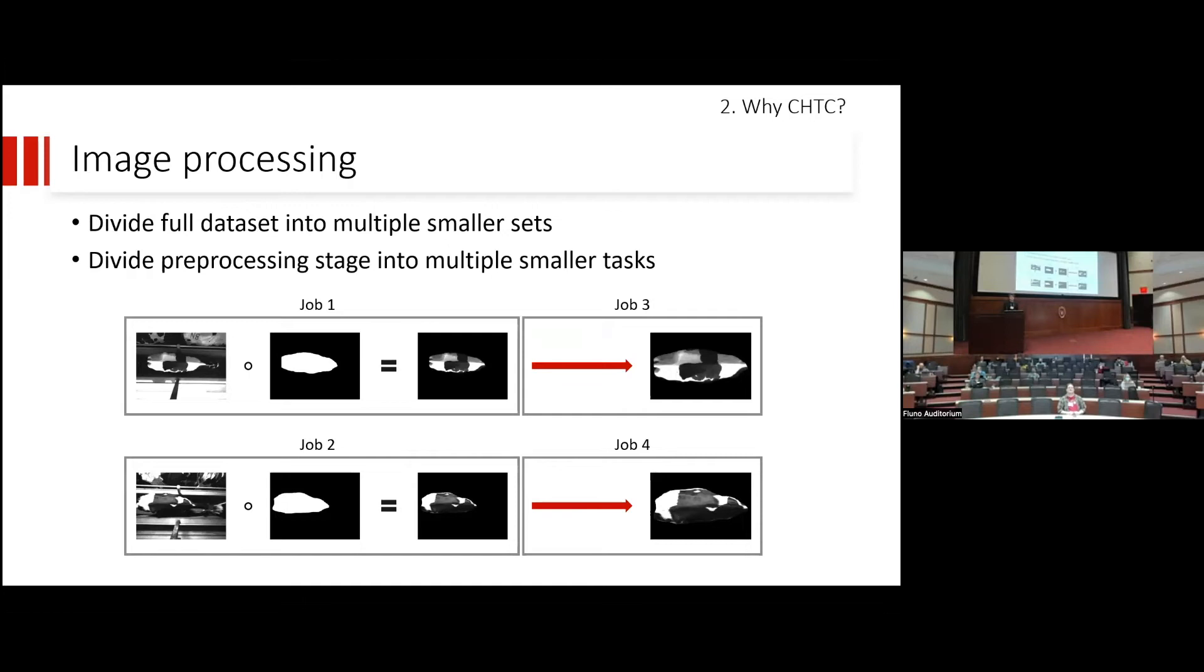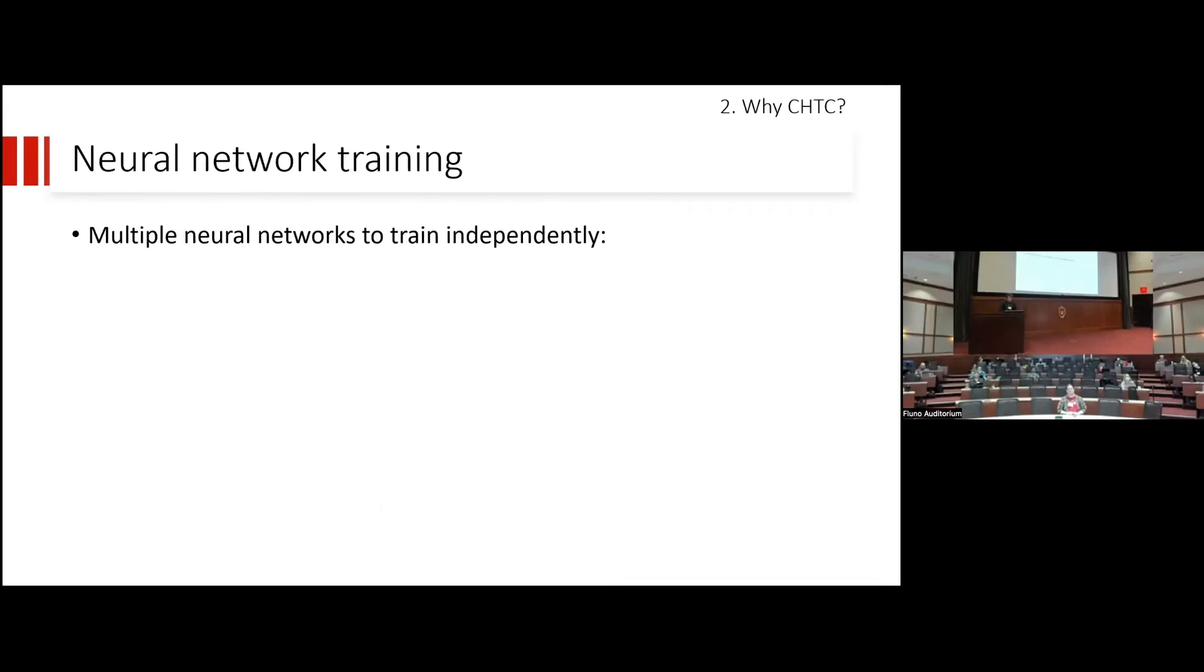Talking about image processing, it's very nice that we can split our full image data set in smaller bits, and then process them in parallel using high throughput computing. Instead of performing all the processing in a single job for all my hundreds of thousands of images, we can split that into thousands of smaller data sets and then process them at the same time using separate jobs. Even different steps of the pre-processing stage can be done separately as long as they are independent of each other or if we already have the results from previous steps.